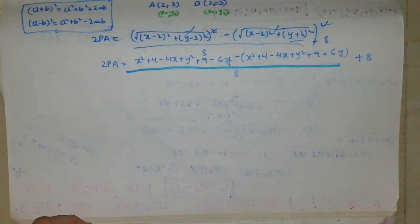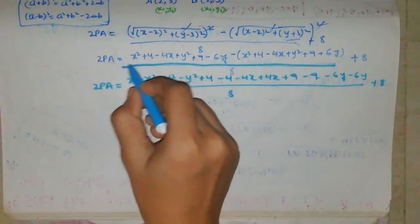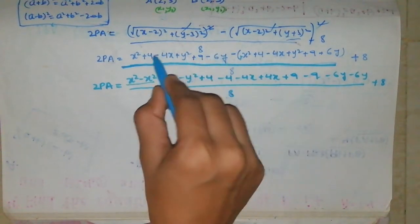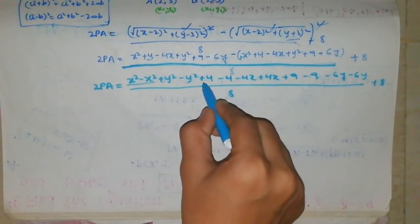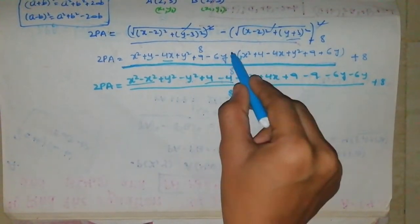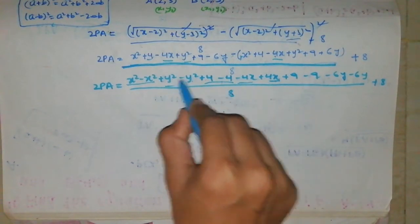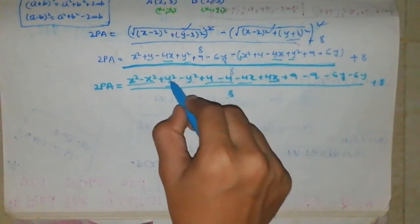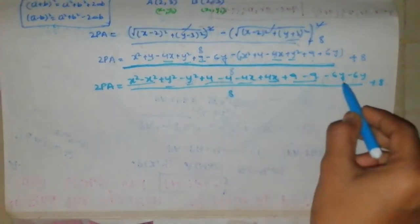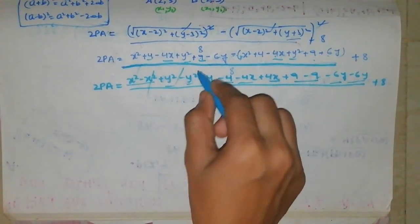Now let us simplify. We expand: x squared, minus x squared cancel. Plus 4, minus into plus gives minus 4. Minus 4x, and minus into minus gives plus 4x — these cancel. Then y squared, plus into minus gives minus y squared. Again 9, minus into plus gives minus 9. Minus 6y, minus into plus gives minus 6y.